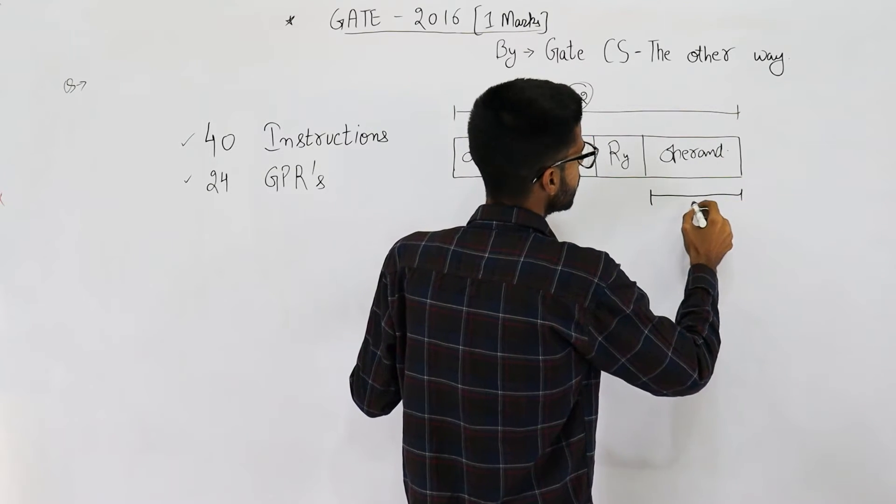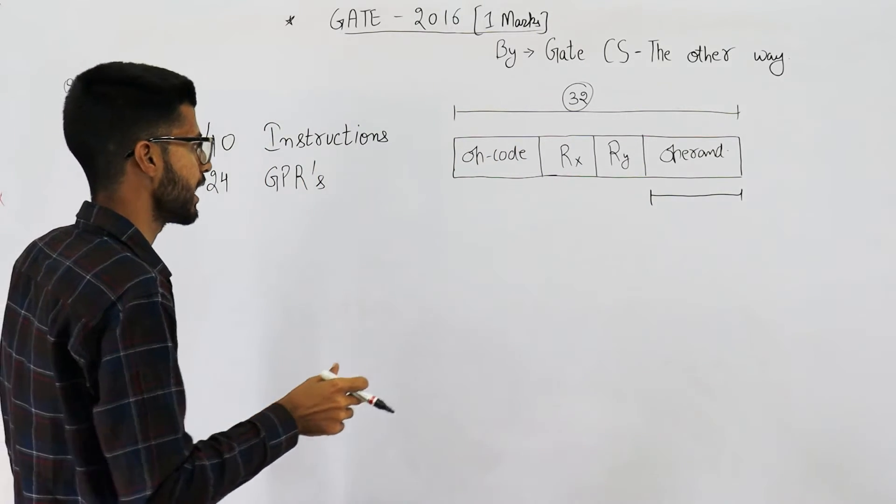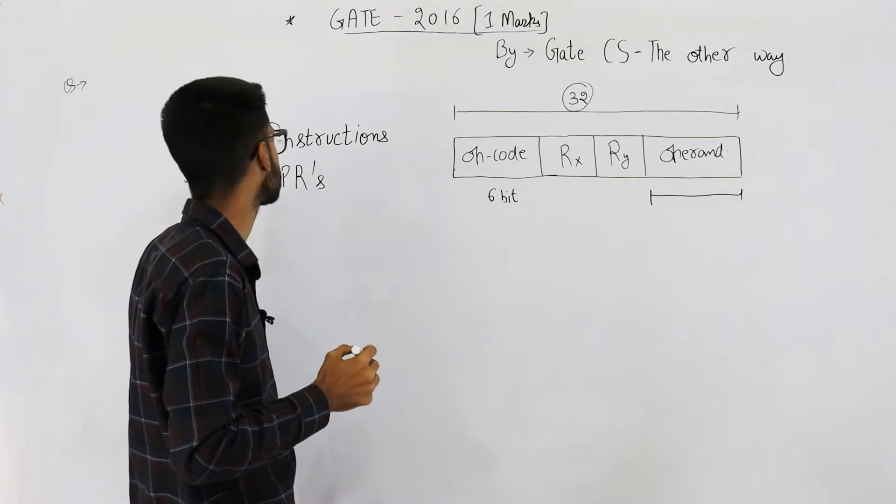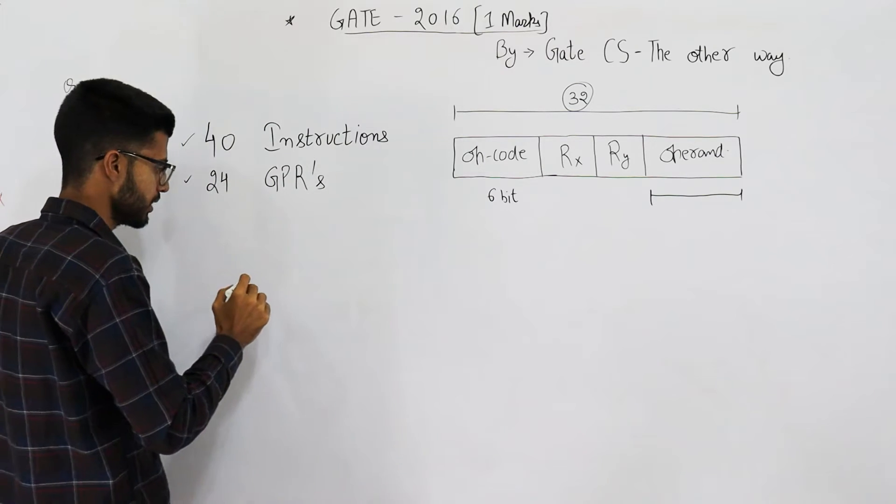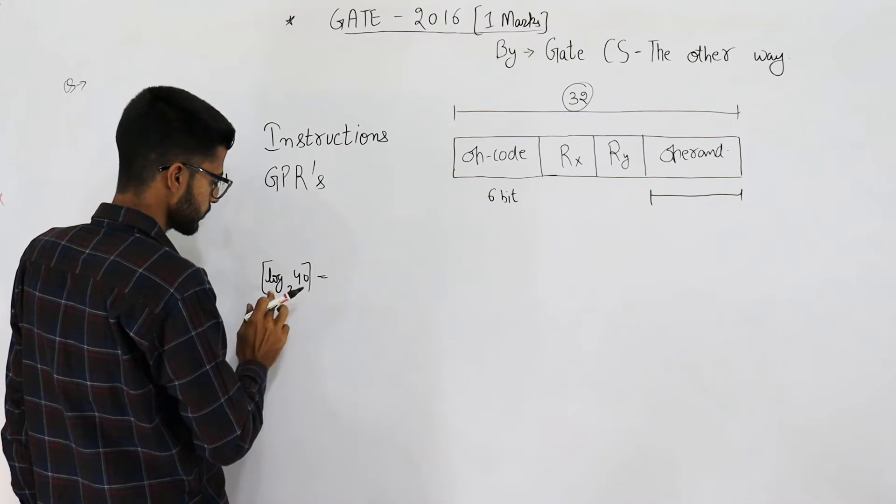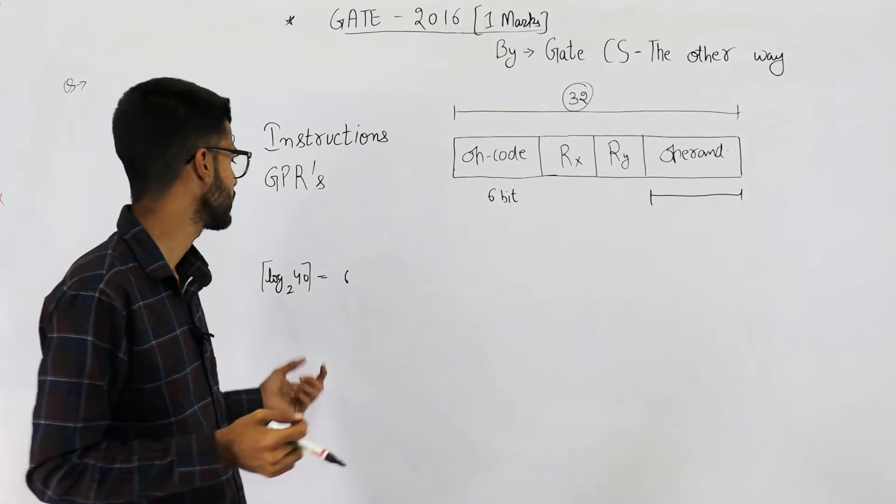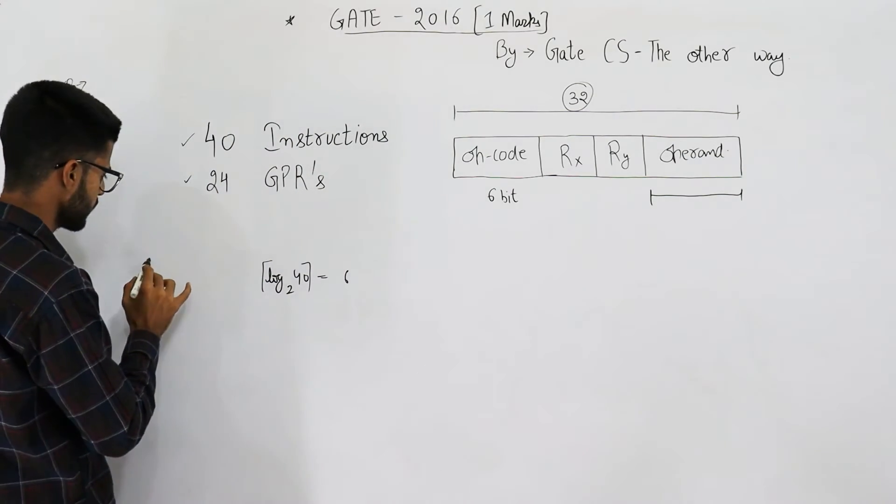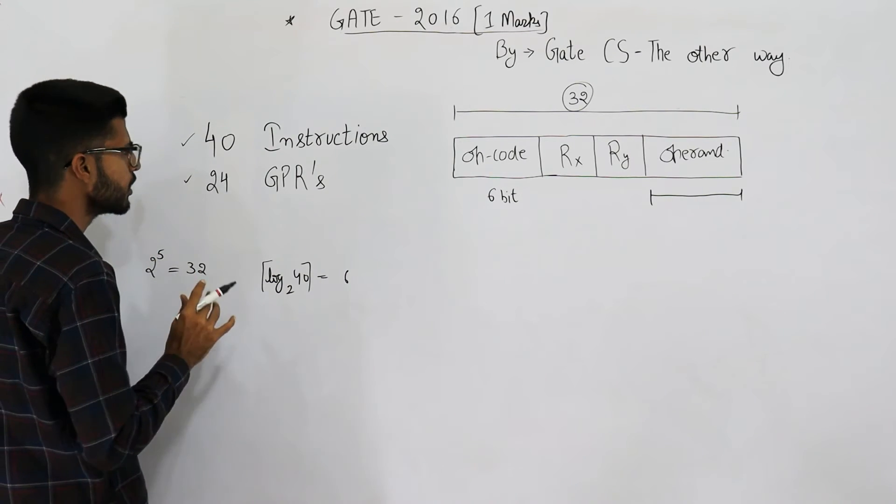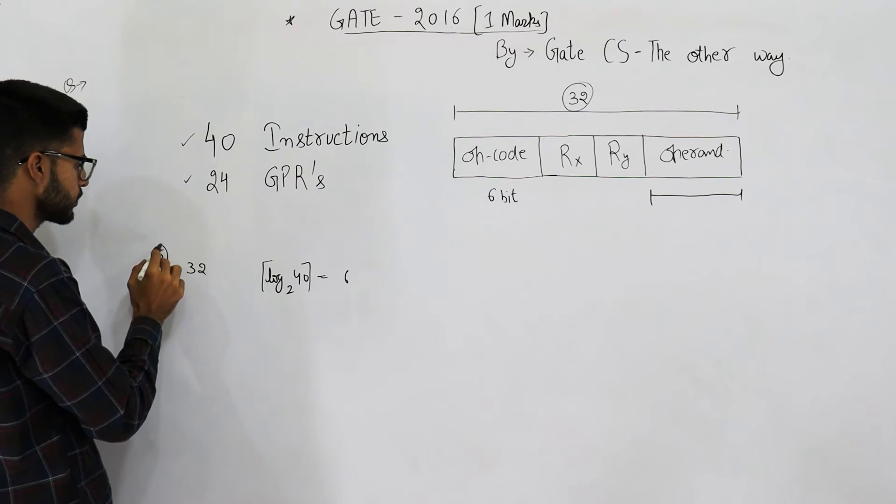So there are 40 instructions in total. That means the opcode has to be of 6 bits. Why? Because log 40 to the base 2 ceiling is 6. Log 40 to the base 2 is 5 point something, you take the ceiling at 6. And moreover, if you use 5 bits then you can address only 32 items or you can support a maximum of 32 instructions. That means you need one more bit, that is 2 power 6.